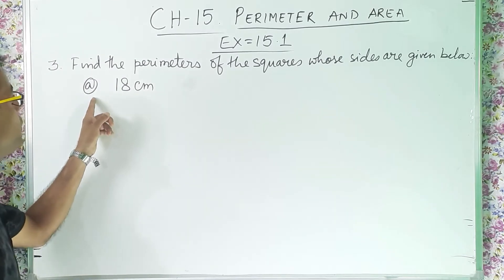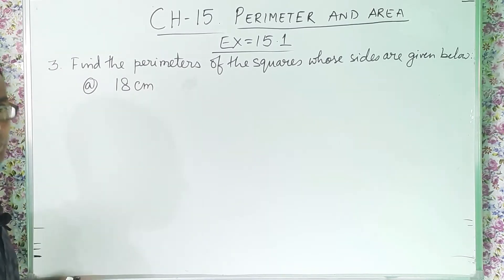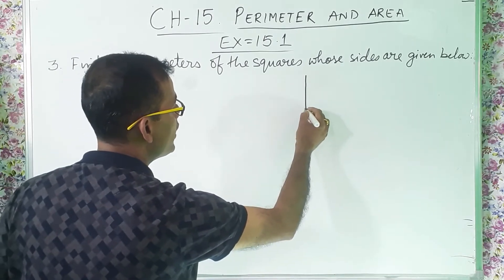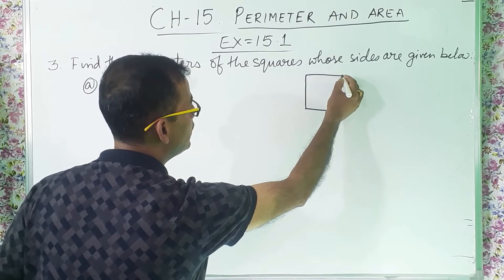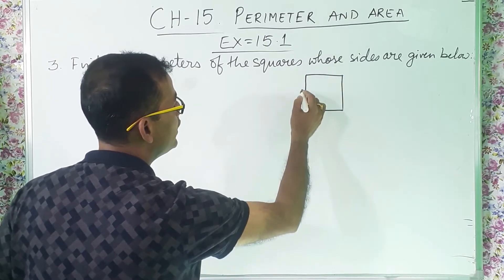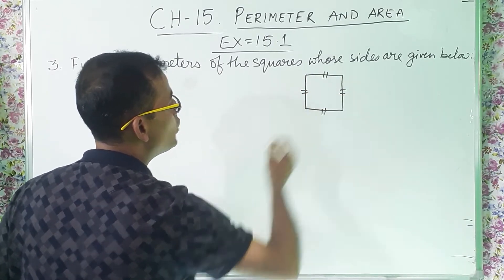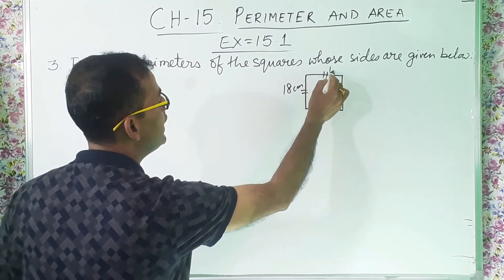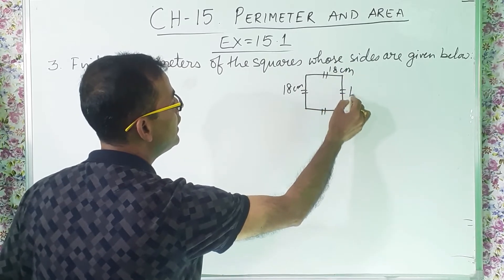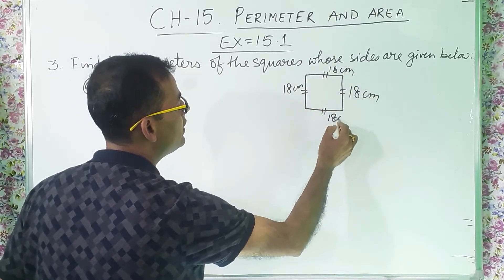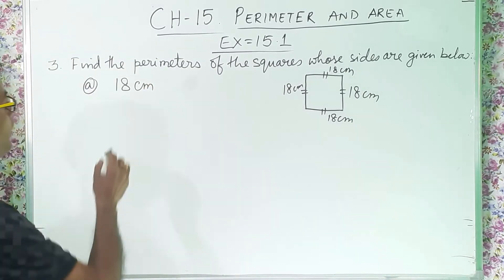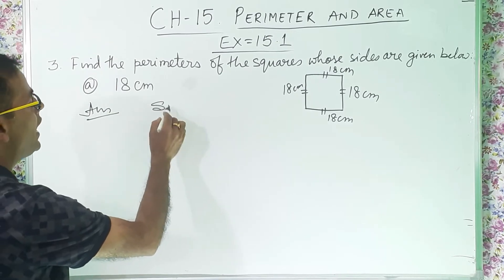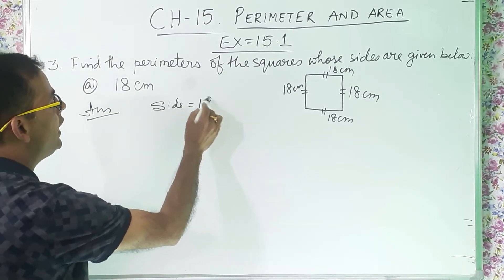Now question number 3A: 18 cm. I will draw one square. Square means the 4 sides are equal. So all the sides are 18 cm, 18 cm, 18 cm, 18 cm. If I want to solve the question, I will write side is equal to 18 cm.